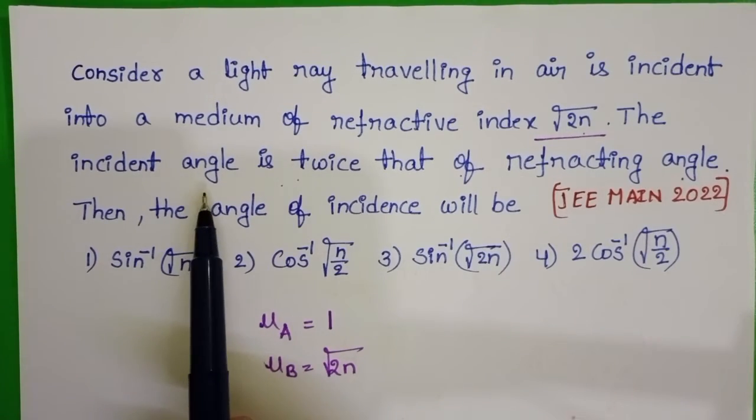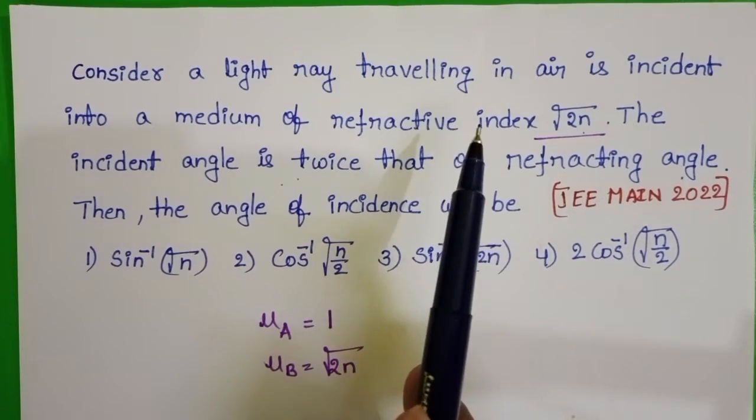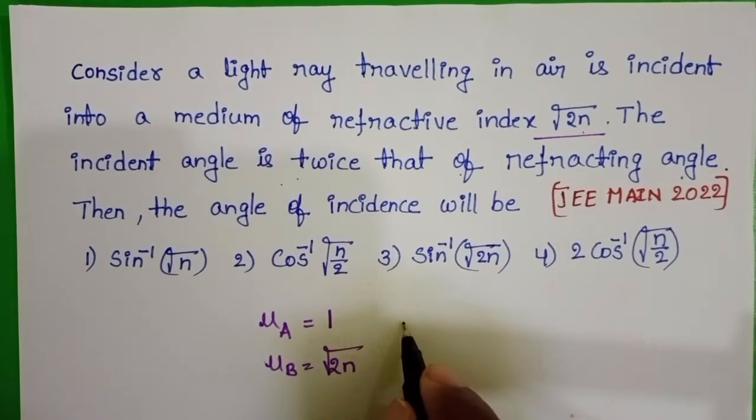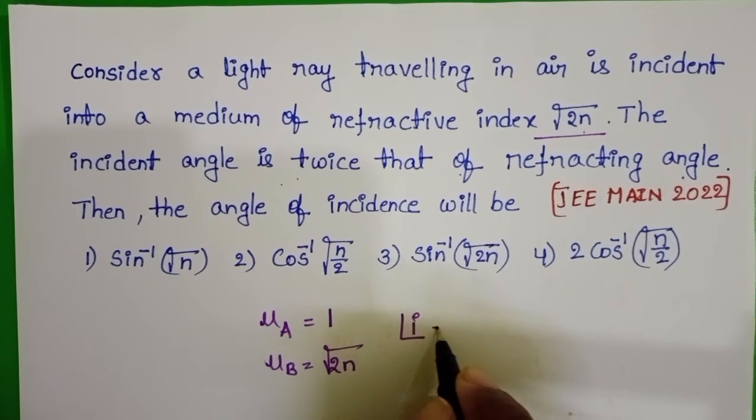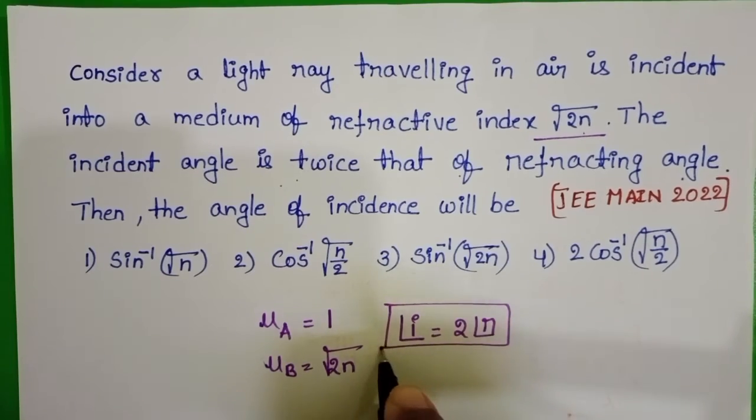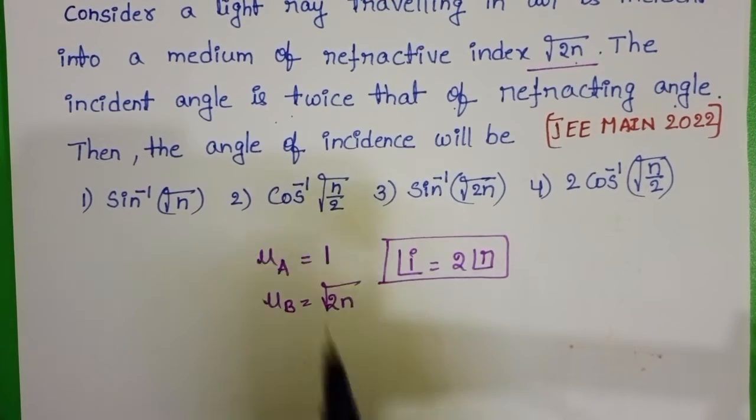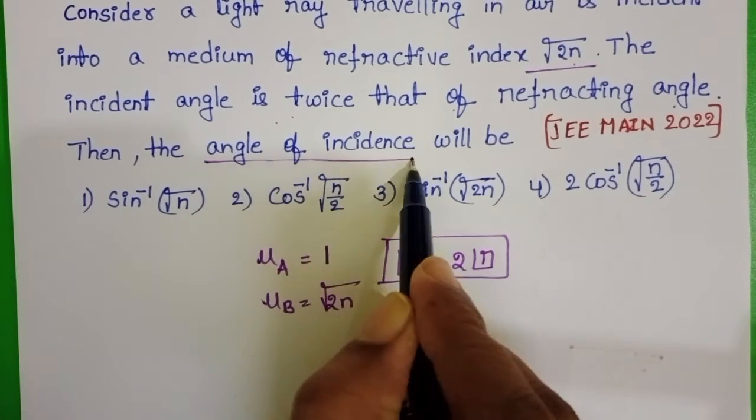The given condition is that angle of incidence is twice that of the refracting angle. Angle i = 2 × angle r. In this question, we have to find out the angle of incidence.